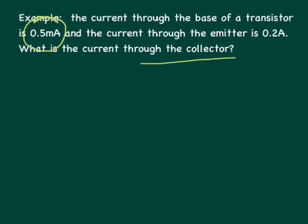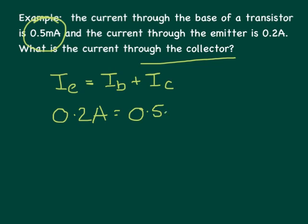So let's start by writing our equation down. The current in the emitter is equal to the current in the base plus the current in the collector. Then I put in our values, so we have 0.2 amps is equal to 0.5 milliamps plus our collector current.